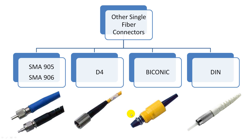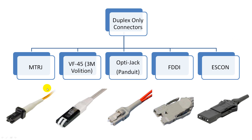Some other non-obsolete legacy connectors include D4 and Biconic. One less common one is called the DIN connector. These connectors are available in duplex (two fiber) version only and do not have a simplex single fiber version. The MTRJ connector is a small form factor duplex connector with both fibers in a single polymer ferrule. It is available in multi-mode version only and has a snap coupling mechanism like an LC connector.